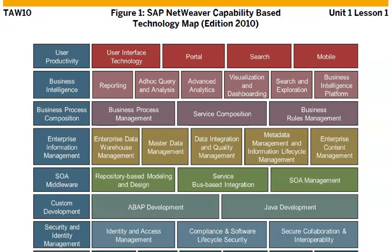It comes in various categories. For example, in the area of security, we have options like identity and access management, compliance and software lifecycle security, and security collaboration. For custom development, it can be done on either ABAP or Java — we can log into an ABAP editor or a Java editor and build the applications we want. We will primarily work on ABAP development, but certain things are better developed on the Java platform.